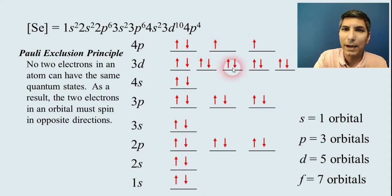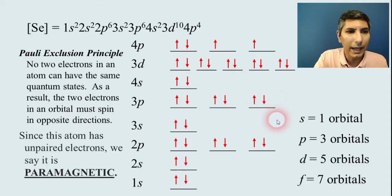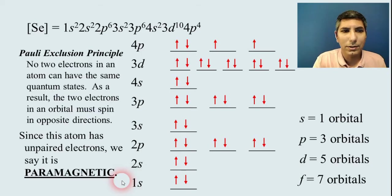I want you to notice something here. We've got two unpaired electrons. They're just sitting in their orbitals by themselves. So since we have unpaired electrons in this atom, we call this atom paramagnetic. It exerts a special type of magnetism called paramagnetism.